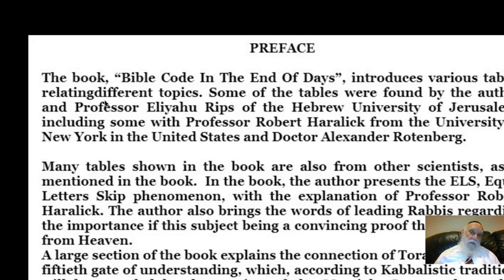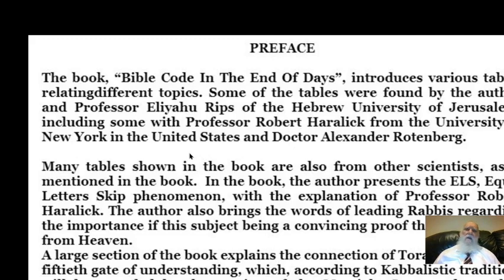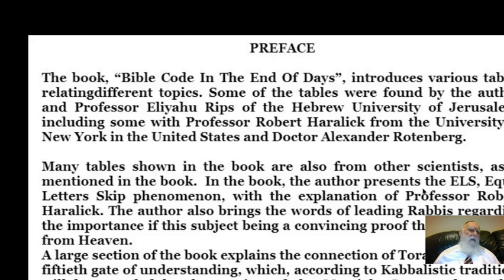Bible code in the End of Days: through various tables relating to different topics, some of the tables were found by the author and Professor New York of the Hebrew University of Jerusalem, including some with Professor Ralli from the University Gender Center, University of New York, and also with Dr. Alexander Ottenberg. Many tables shown in the book are also from other scientists, as is mentioned in the book. They also present the ELS — Equidistant Letter Sequence — with the explanation of Professor Robert Aradig.